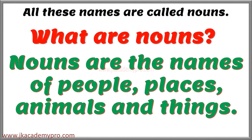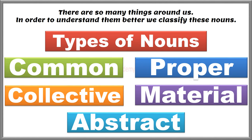So what are nouns? Nouns are the names of people, places, animals and things. There are so many things around us, and in order to understand them better, we classify these nouns.